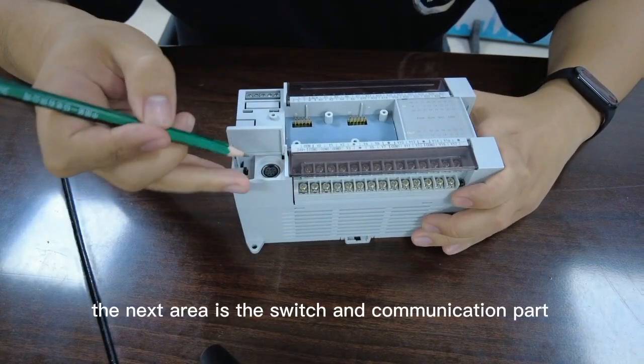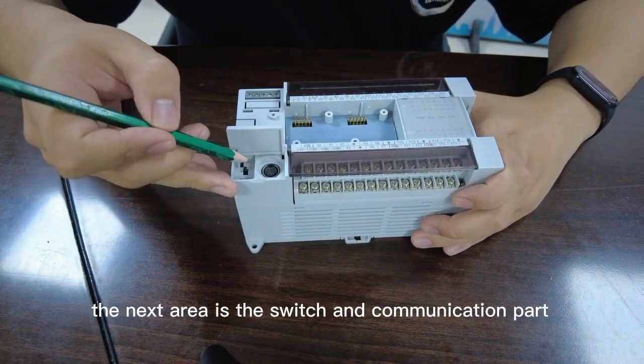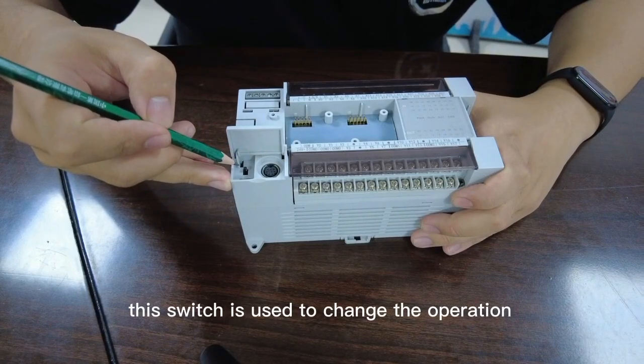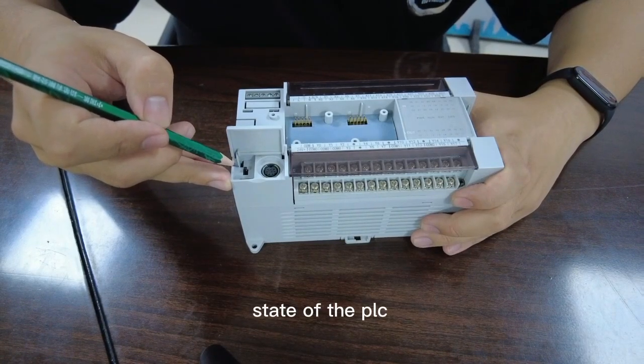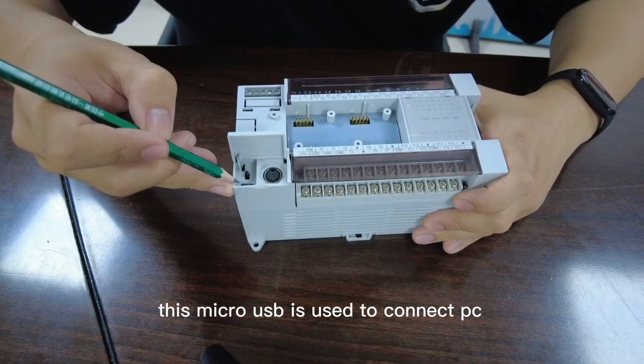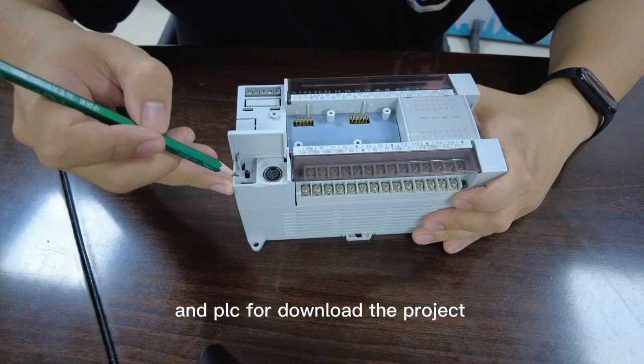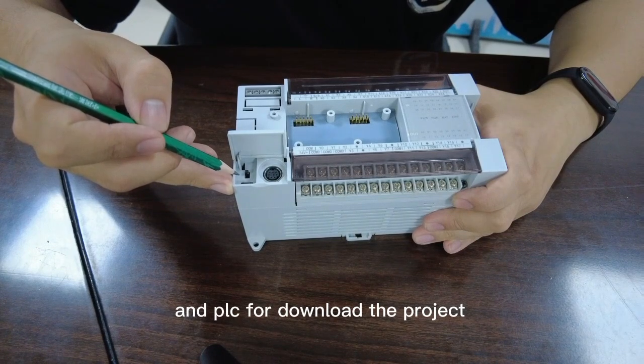The next arrow is the switch and communication port. This switch is used to change the operation state of the PLC. This micro USB is used to connect the PC and PLC for downloading the project.